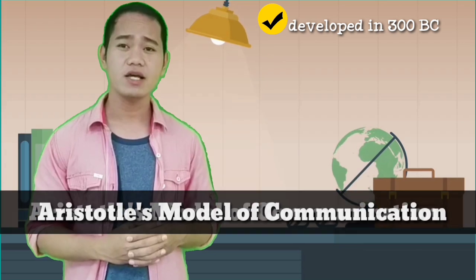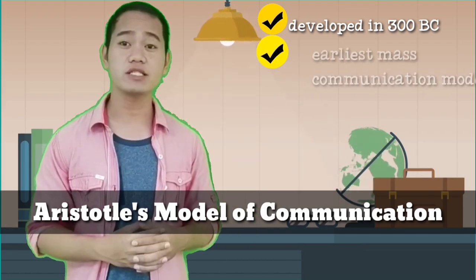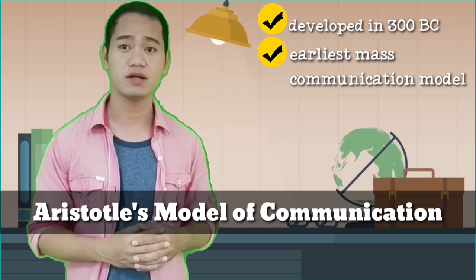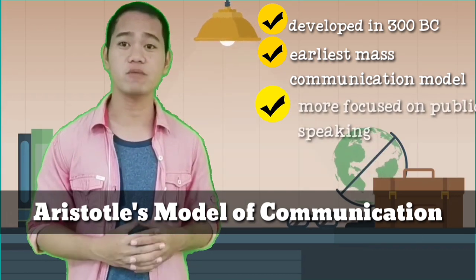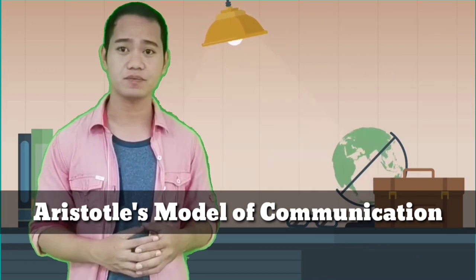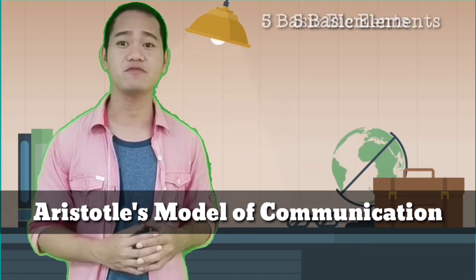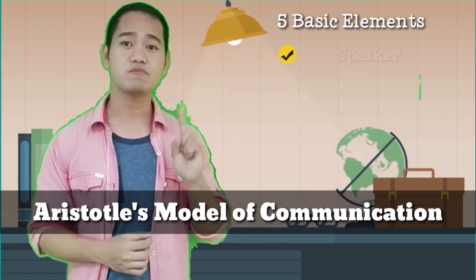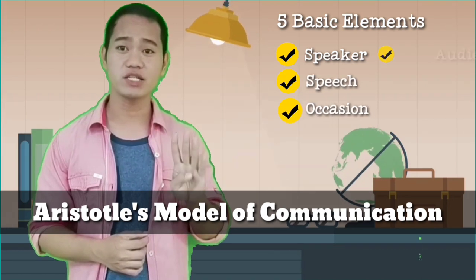The first model of communication developed in as early as 300 BC is Aristotle's model, which is considered the earliest mass communication model. Hence, this model of communication is more focused on public speaking than interpersonal communication. Aristotle's model of communication is formed with five basic elements: the speaker, speech, occasion, audience, and effect.